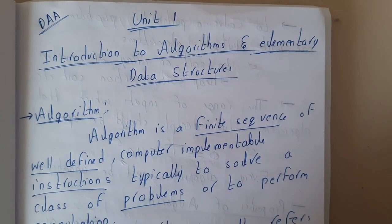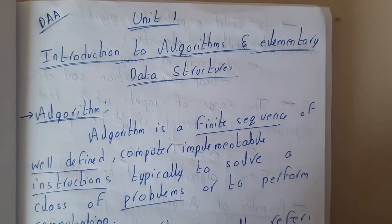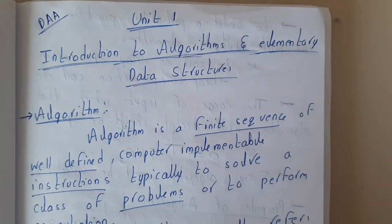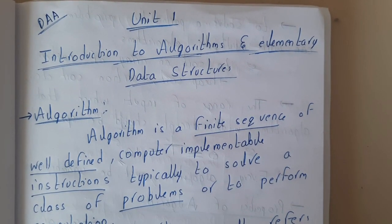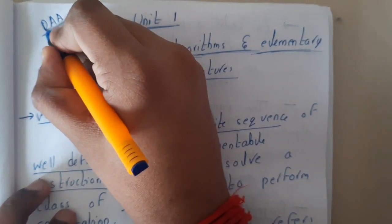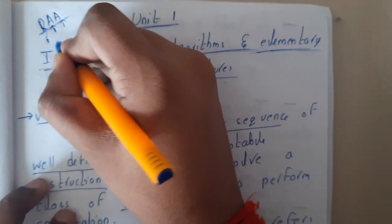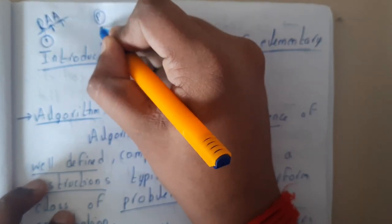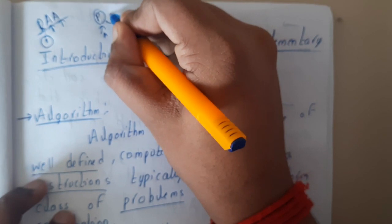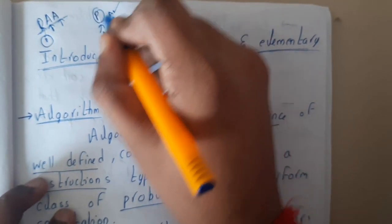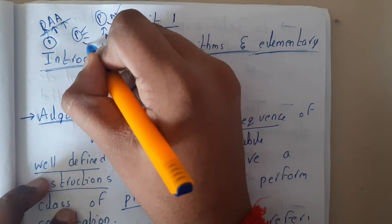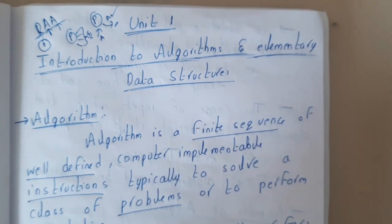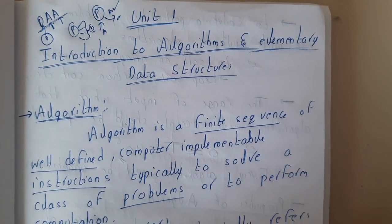Hello guys, we are back with our next set of video lectures. In this series we are going to start Design and Analysis of Algorithms. From the name itself we can say design and analysis of algorithms — we will be designing an algorithm for a particular problem and then analyzing it. Analyzing is basically determining whether it is the best solution or not. For a particular problem we can write many solutions, and among all of them, which is best — that is what this subject defines.